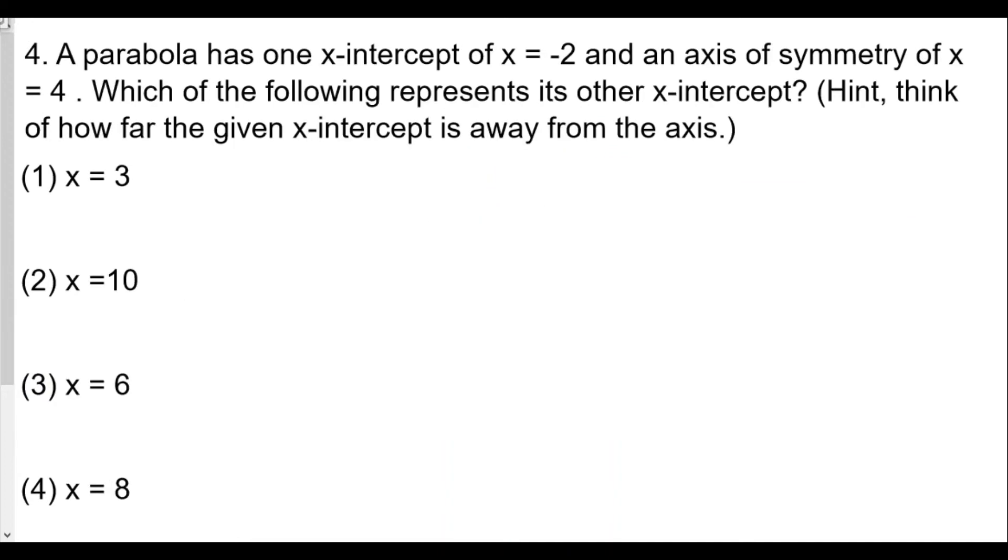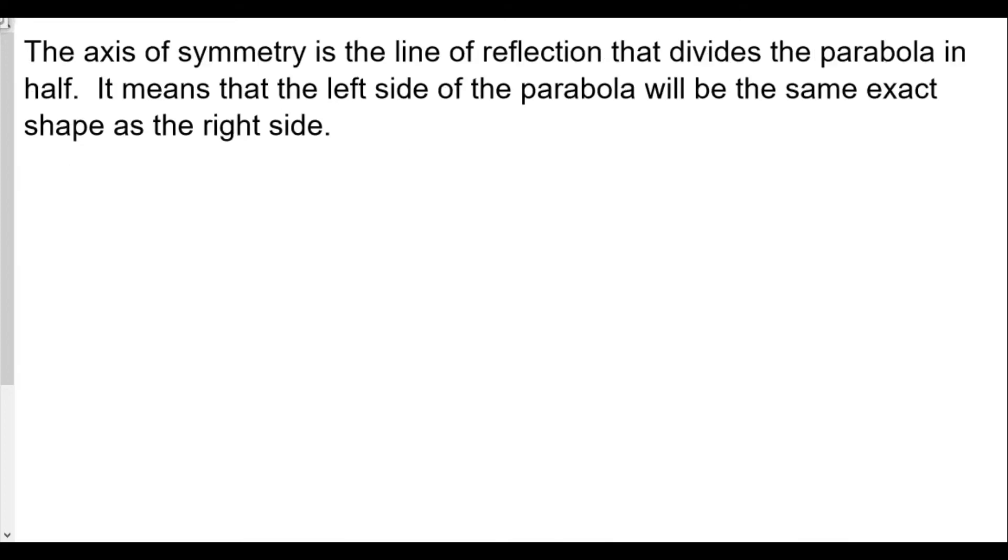A parabola has one x-intercept of x equals negative two and an axis of symmetry of x equals four. Which of the following represents its other x-intercept? Think about how far the given x-intercept is away from the axis. The axis of symmetry is a line of reflection that divides the parabola in half. It means the left side of the parabola will be exactly the same shape as the right side. Our axis of symmetry goes down the middle, and the left side and right side are the same. If we have one point here, on its opposite side it will be the same exact distance from the axis of symmetry.